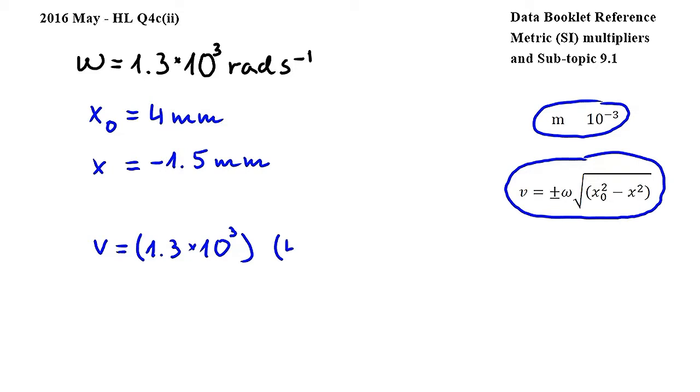and I will use this conversion from the metric multiplier section of the data booklet to convert millimeters into meters. So for x0, I have 4 times 10 to the power of negative 3, and this is squared, minus x squared, which I will again convert, so I get negative 4.5 times 10 to the power of negative 3 squared, and this is under the square root.